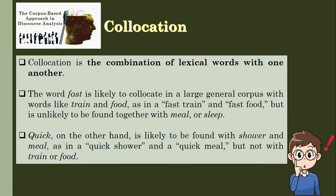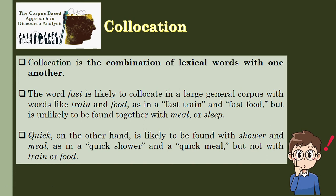The second feature of analysis in a corpus-based approach is collocation, which refers to the combination of lexical words with one another. For example, the word 'fast' is likely to collocate with 'train' and 'food' — giving us 'fast train' and 'fast food' — but unlikely to be found with 'meal' or 'sleep.' The word 'quick,' on the other hand, is likely found with 'shower' and 'meal,' but not with 'train' or 'food.' These examples are products of language research using a corpus-based approach.